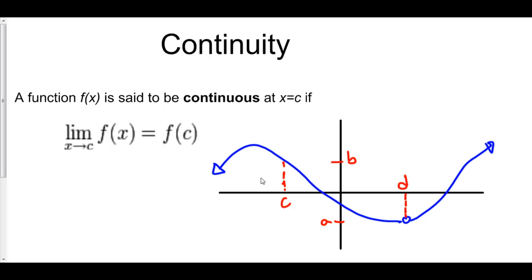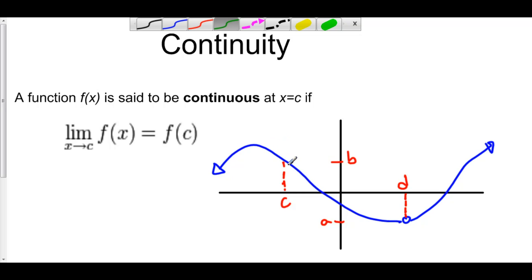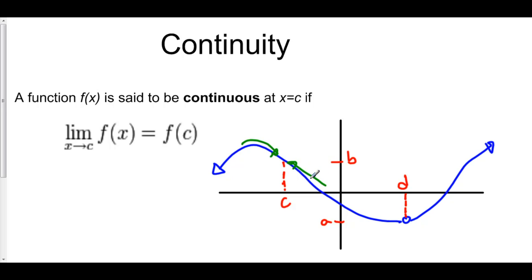What does this mean? Let's take a look at x equals c. If we were to take the limit as x approaches c, we notice that the limit exists here. Why does the limit exist? Because the limit from the left-hand side is approaching b, the limit from the right-hand side is approaching b, and because the left-hand limit equals the right-hand limit, the limit exists and is b.